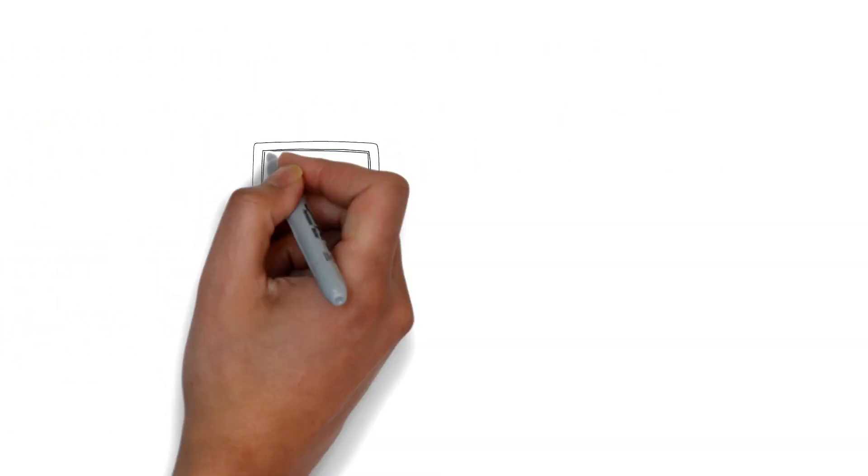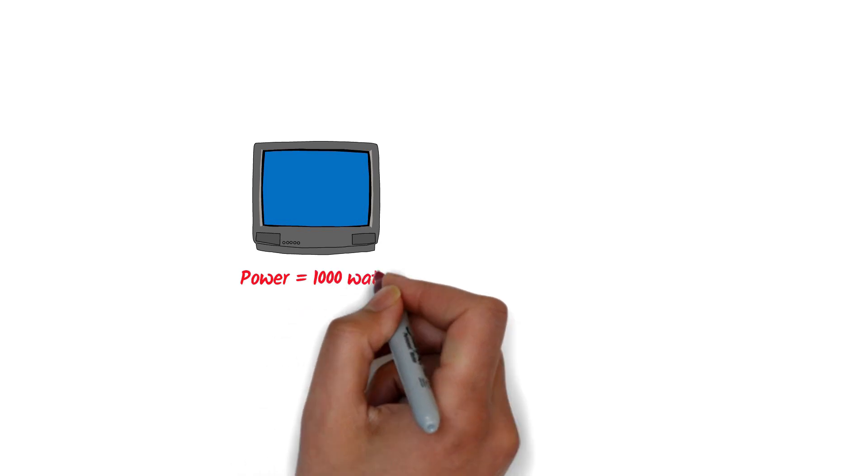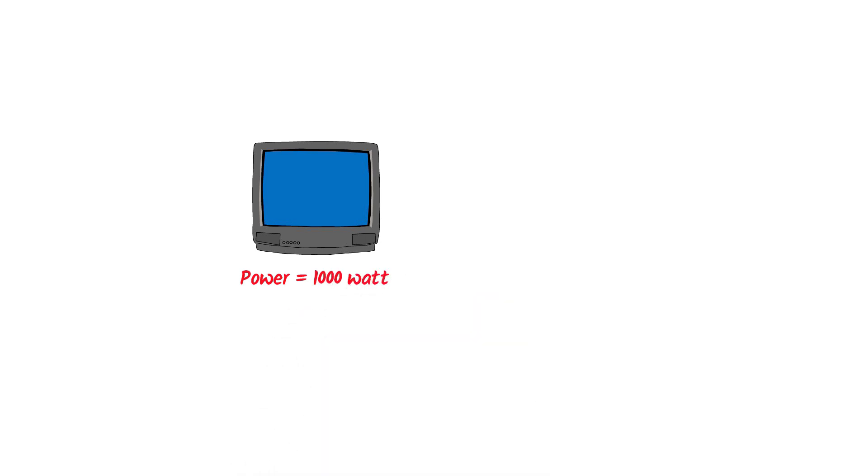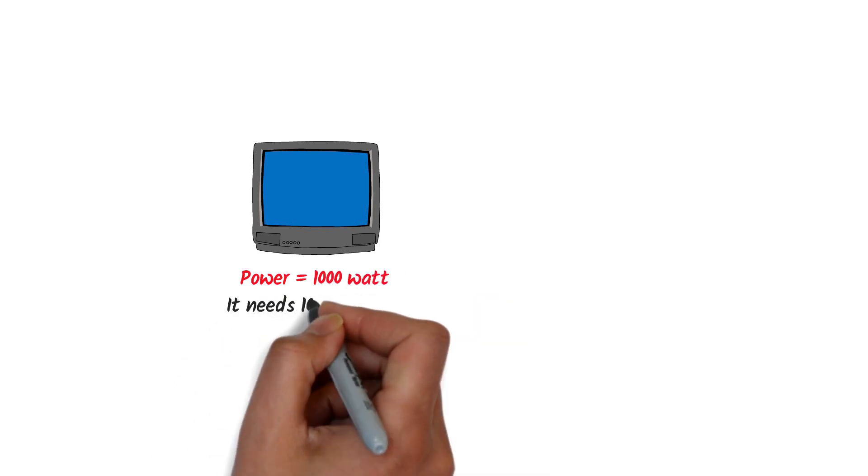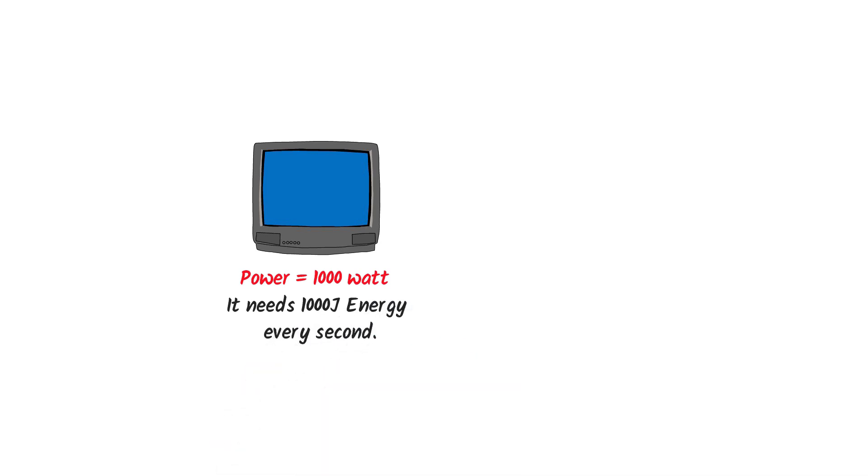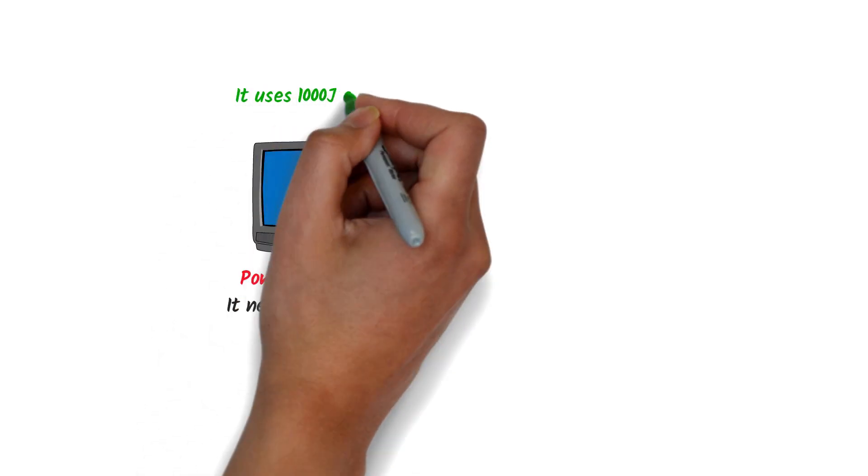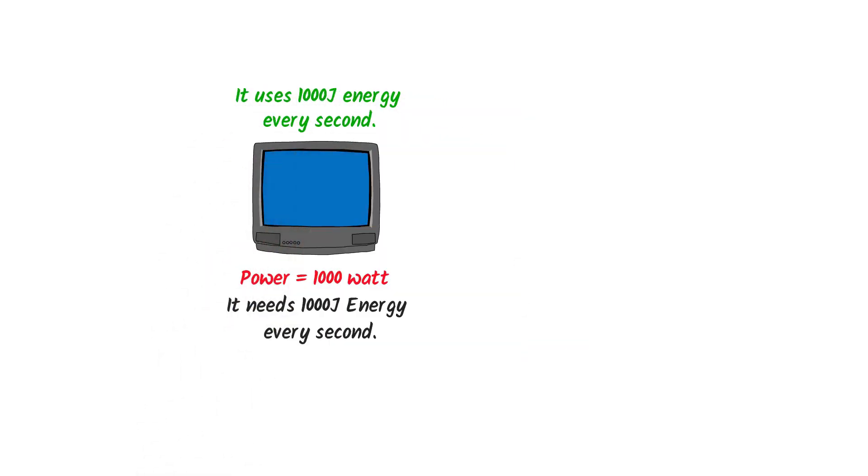For example, you may see 1000 Watt at the back of the TV. It means that we need 1000 Joule energy every second to keep operating the TV or this TV uses 1000 Joule energy every second.